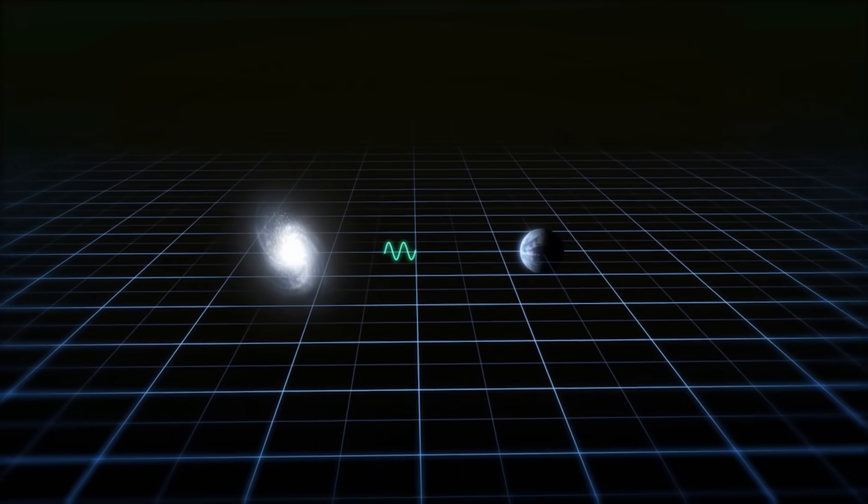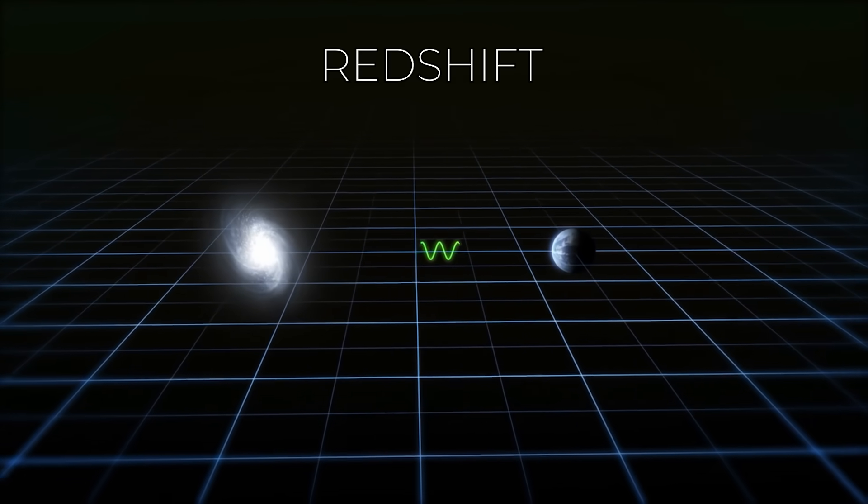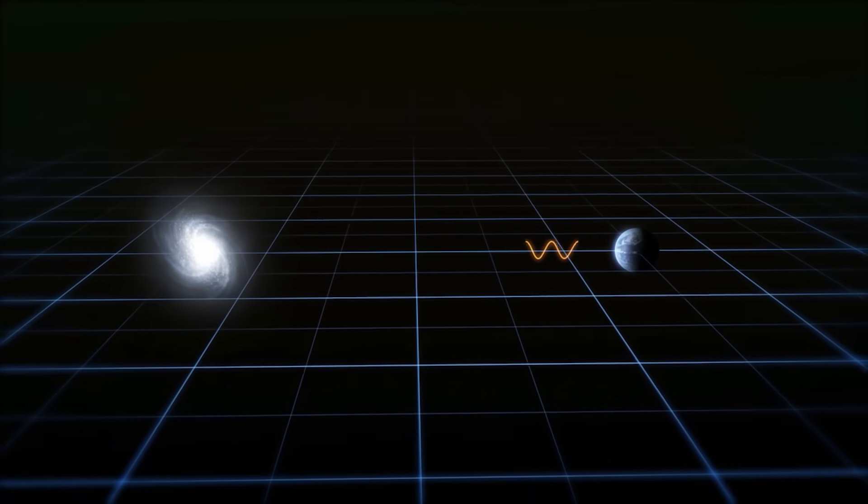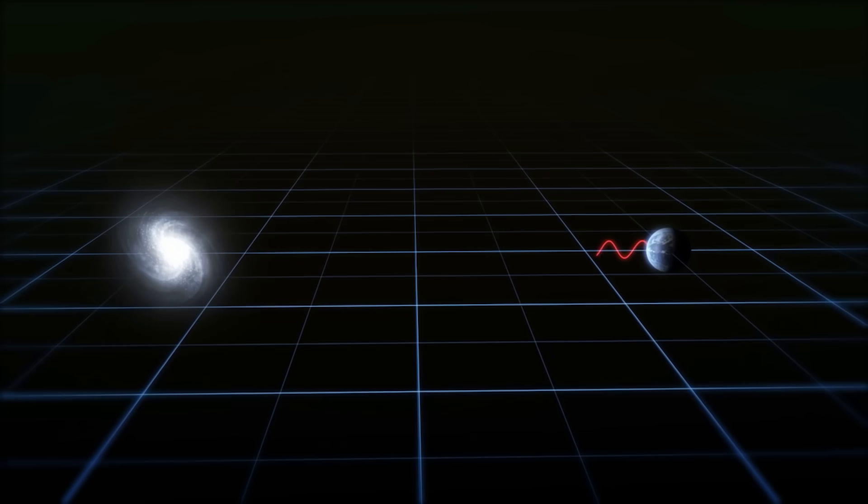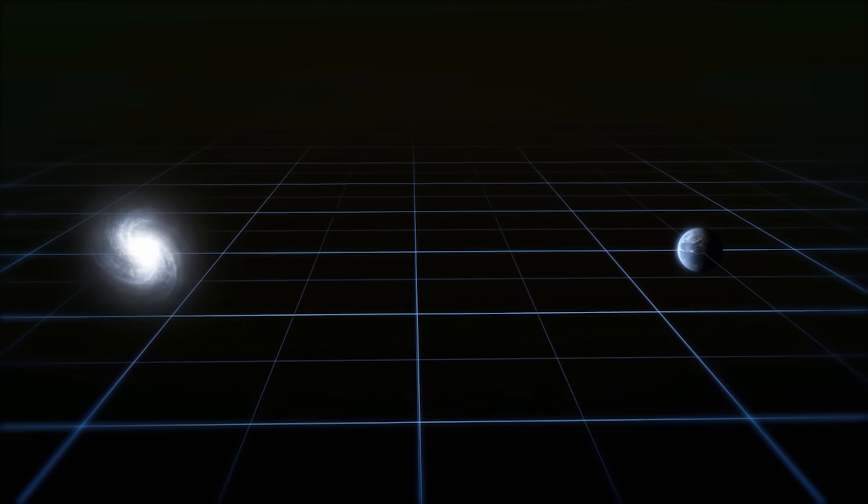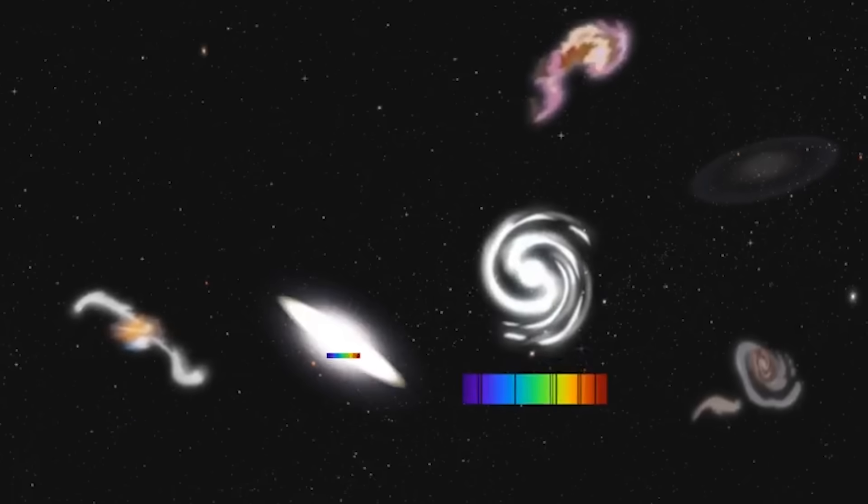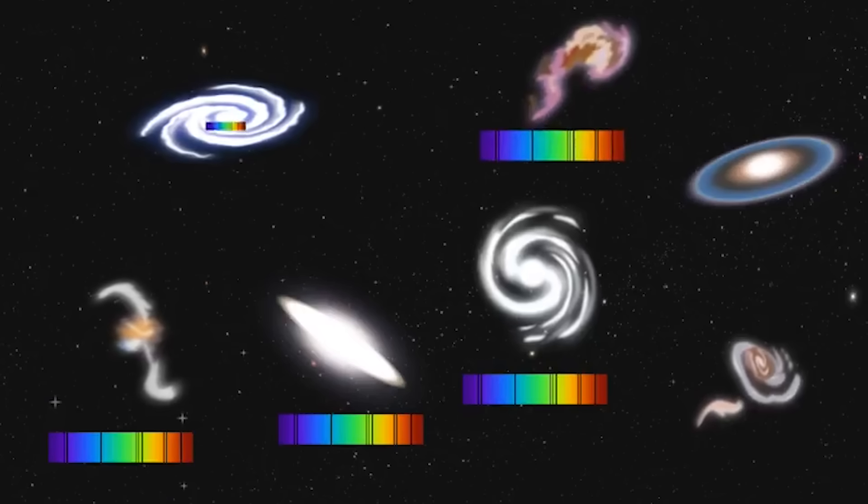Here's how it works. As light from galaxies travels through space, the expanding universe stretches that light, shifting it toward the red end of the spectrum. This is called redshift. The farther away a galaxy is, the more its light is stretched.